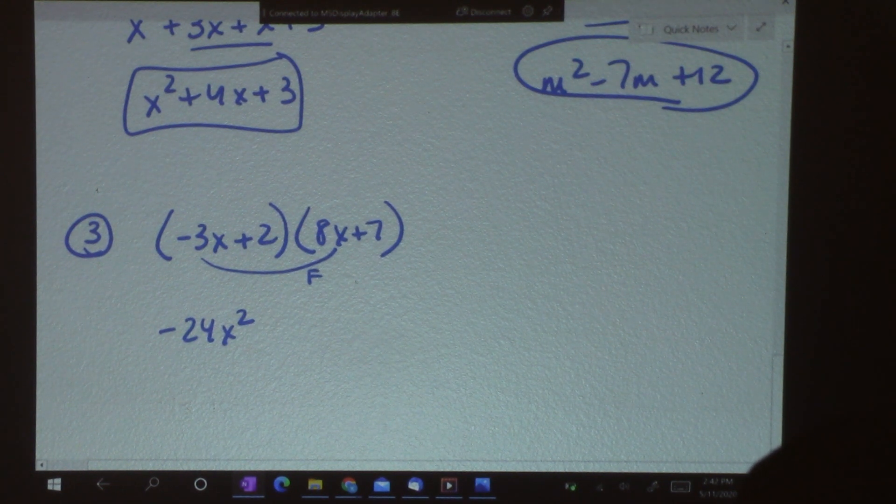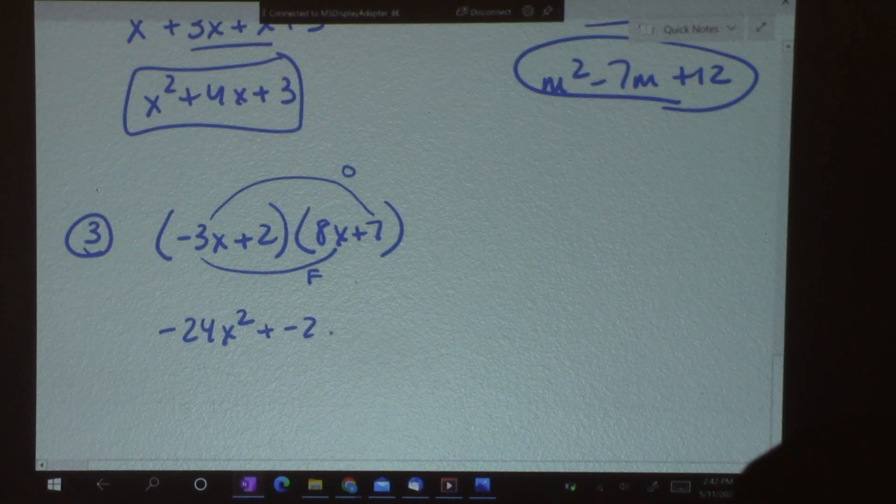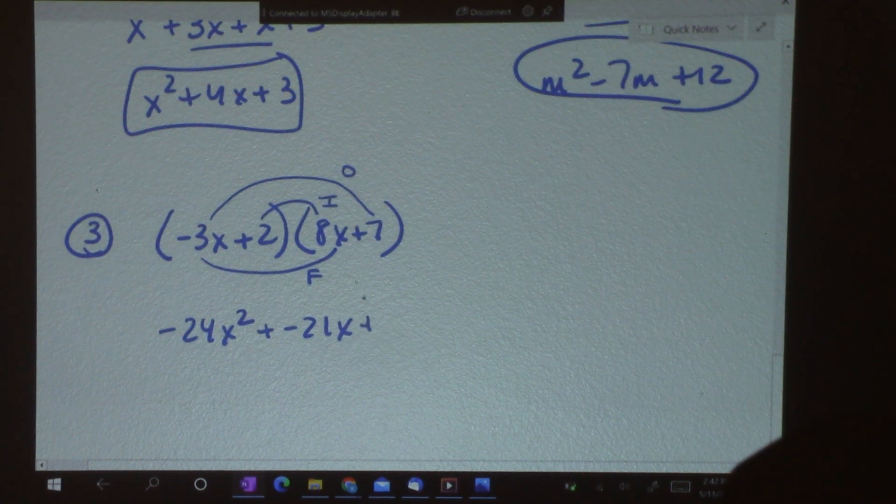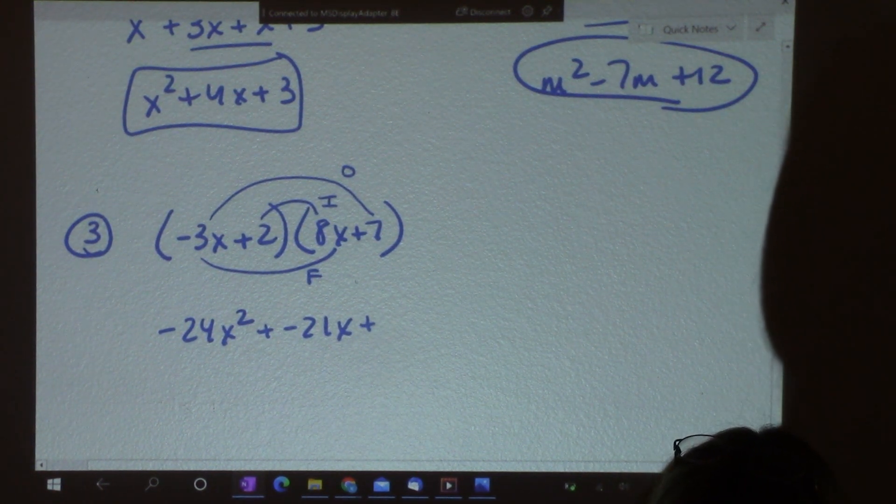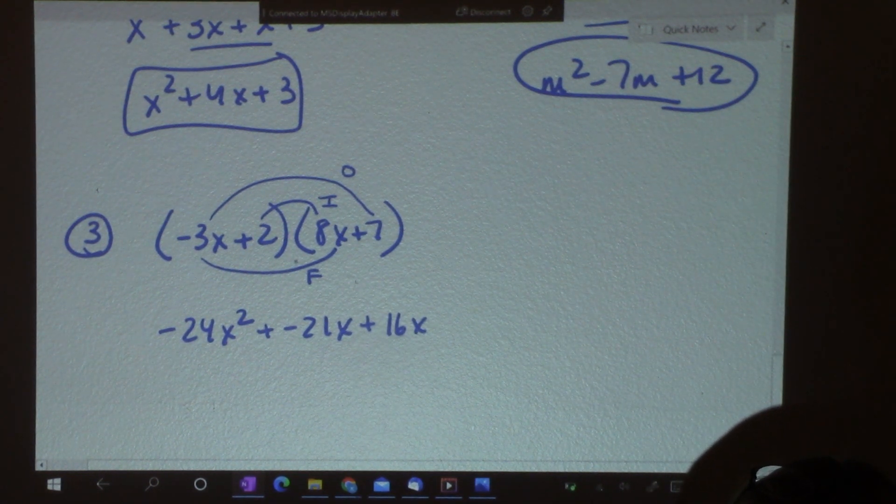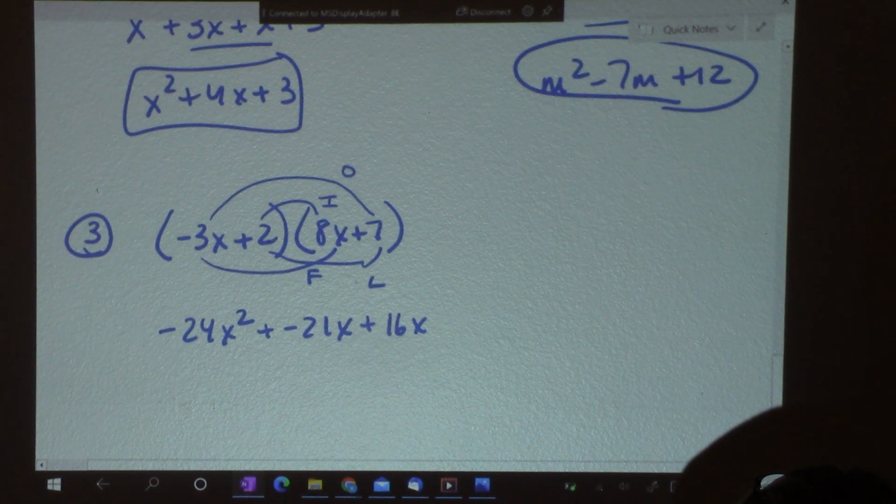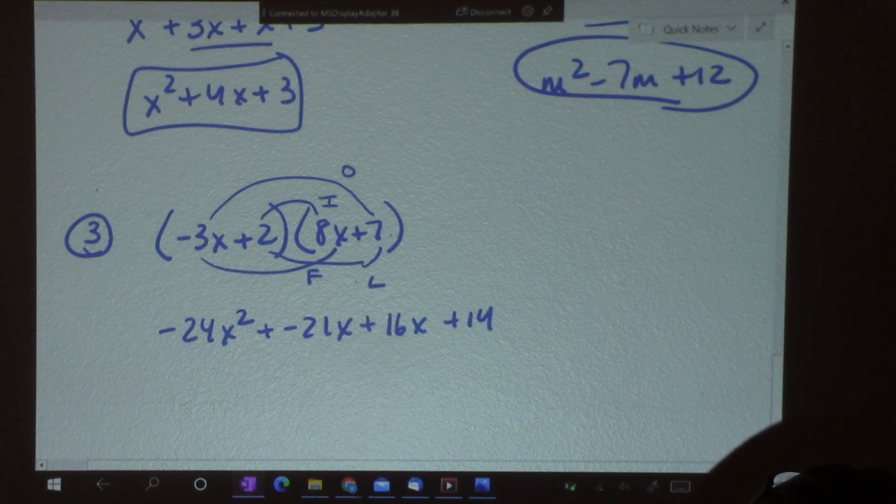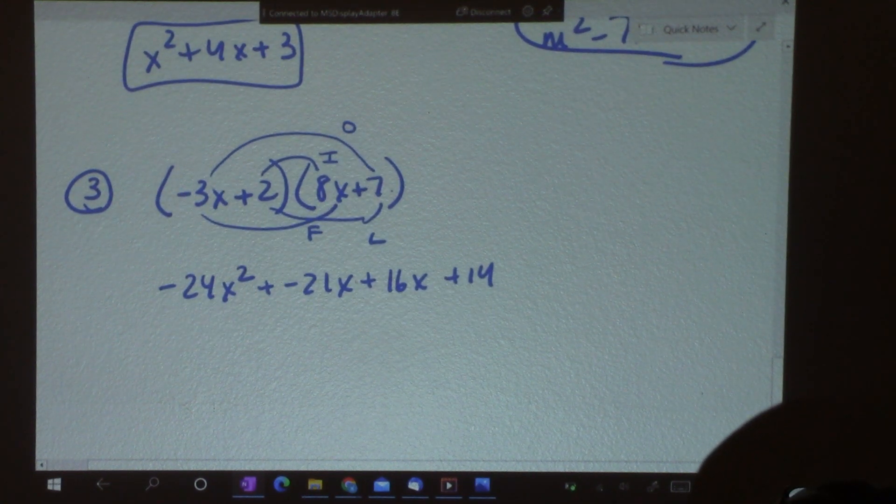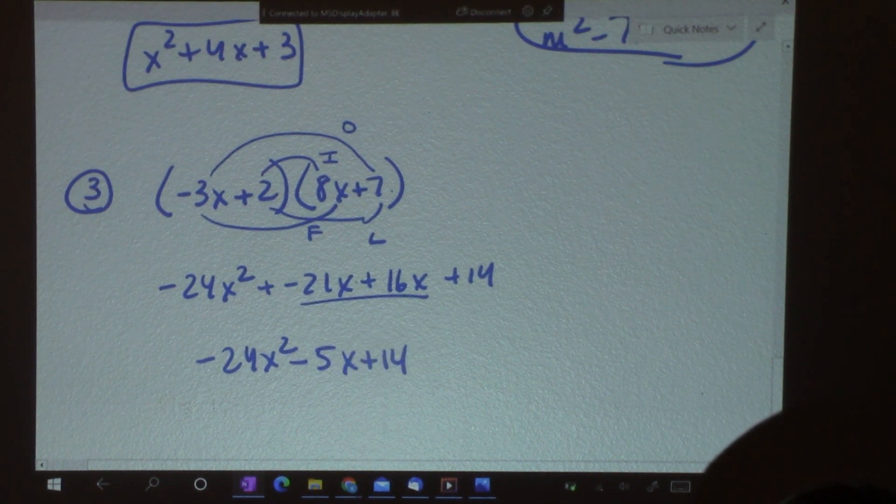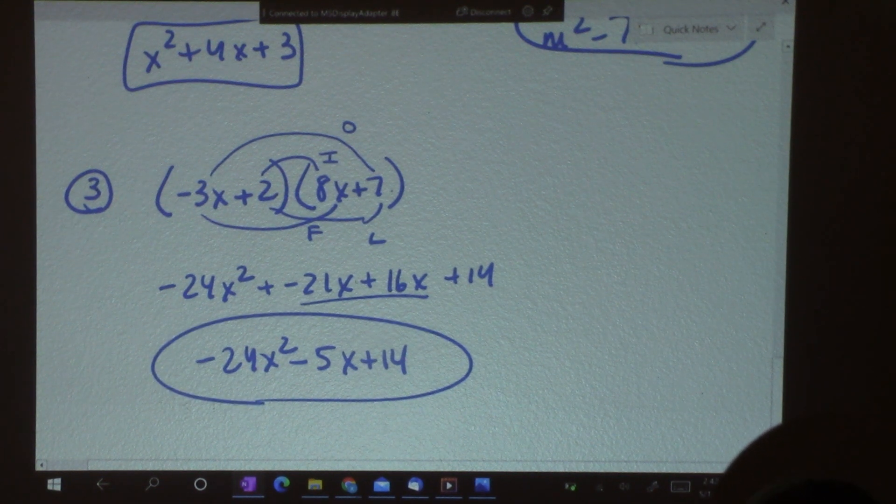And then, on the outside, I've got negative 3x times 7, which is negative 21x. And the inside, 2 times 8x is 16x. And then, last, is 2 times 7, which is 14. If I add these two in the middle, I get negative 24x squared minus 5x plus 14. So, that's my answer. It's just a little bit harder.